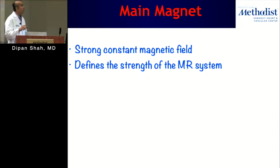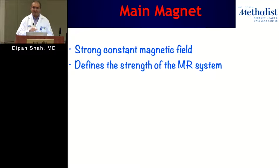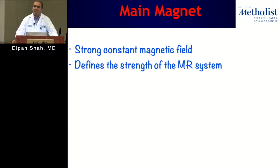The main magnet is a very strong magnetic field, and it defines the strength of the MRI system. In routine clinical practice today, the strengths we utilize are 1.5 tesla and 3 tesla — those are the two main field strengths used.